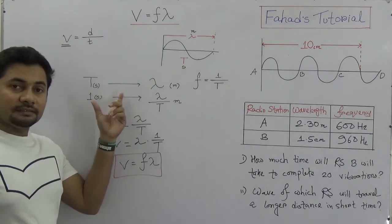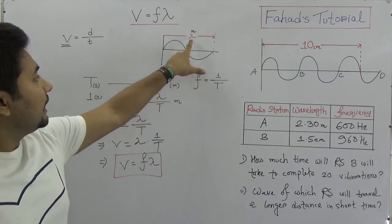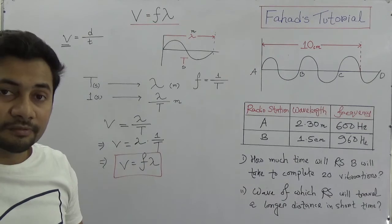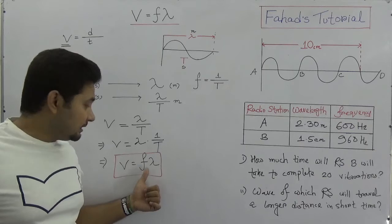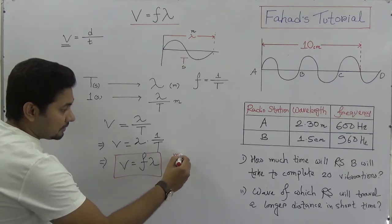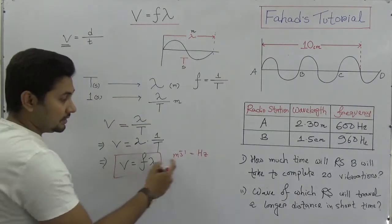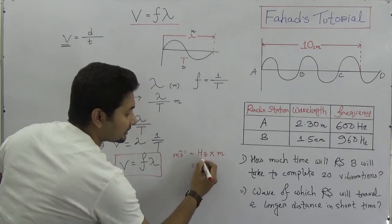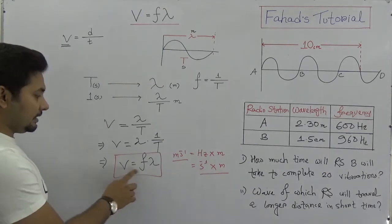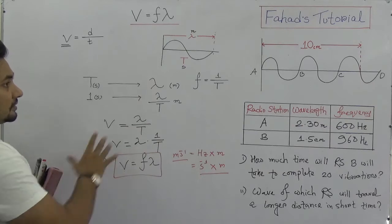The deduction is complete: one complete vibration covers distance lambda in time period T. So V = Fλ. Now checking units: V is velocity so its unit is meters per second; F is frequency with unit hertz, which is per second; lambda is length in meters. Hertz times meters gives meters per second, so the units are consistent. V = Fλ is the equation we use to solve these problems.